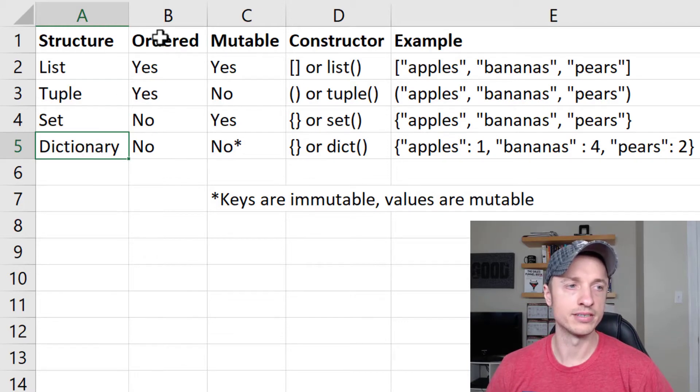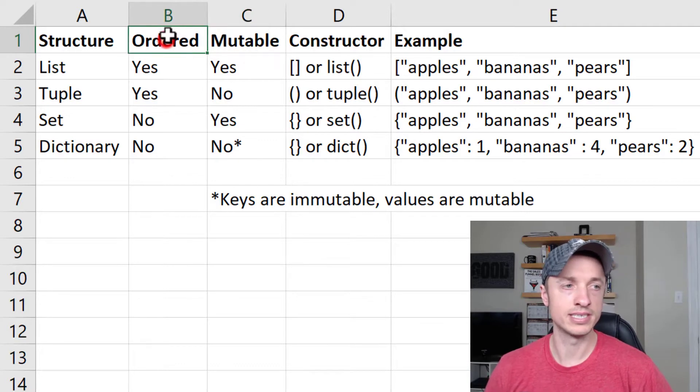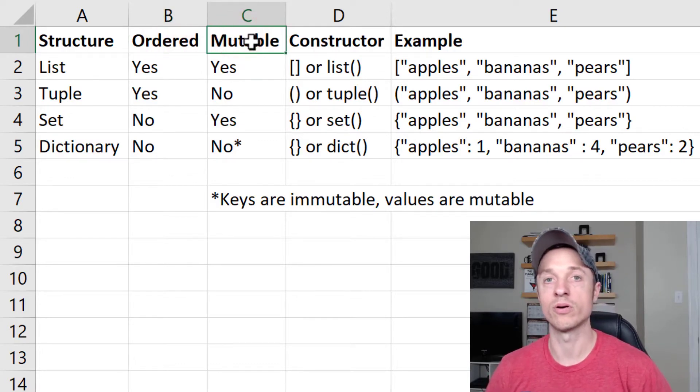Basically, there's two different elements that define these structures. First is if they're ordered or not, and second is if they're mutable or immutable.